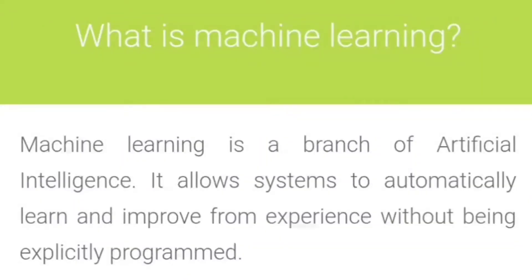What is machine learning? Machine learning is a branch of artificial intelligence. It allows systems to automatically learn and improve from experience without being explicitly programmed.